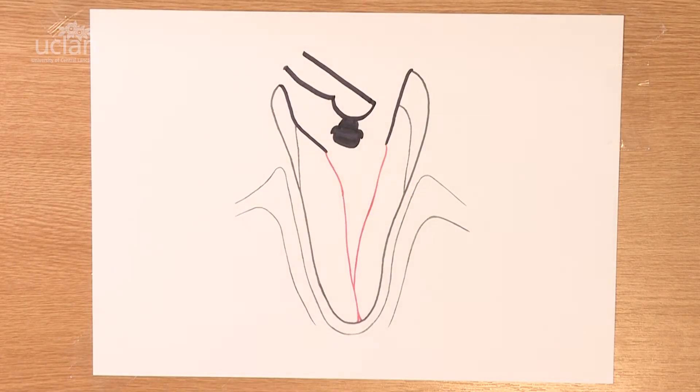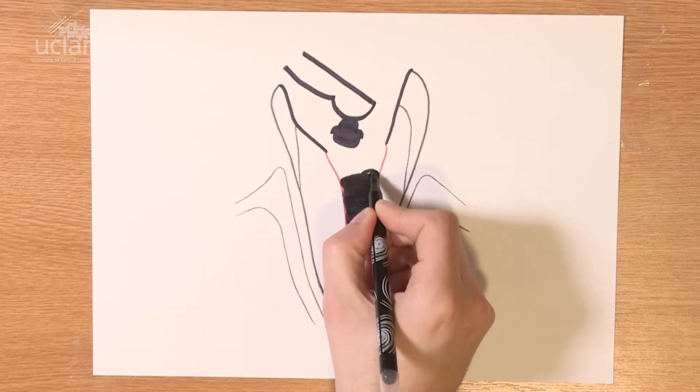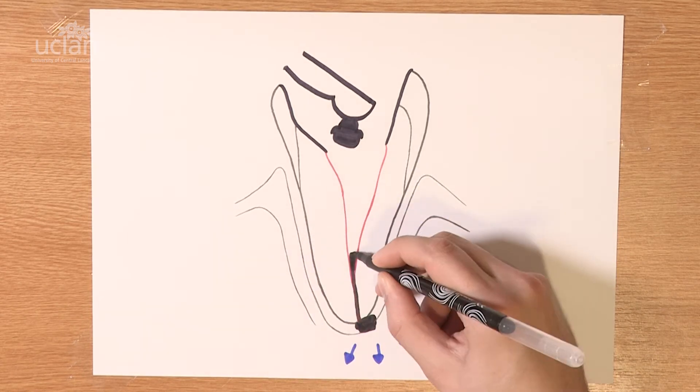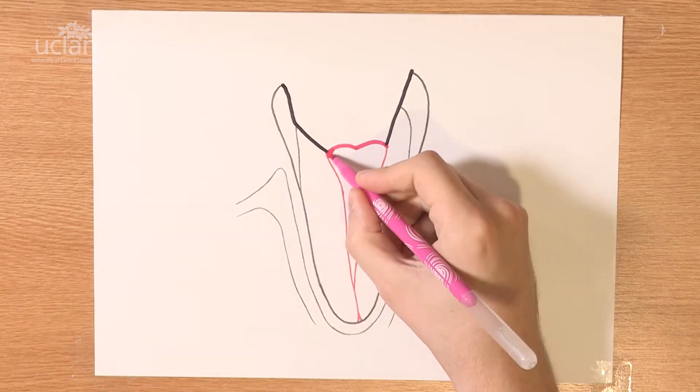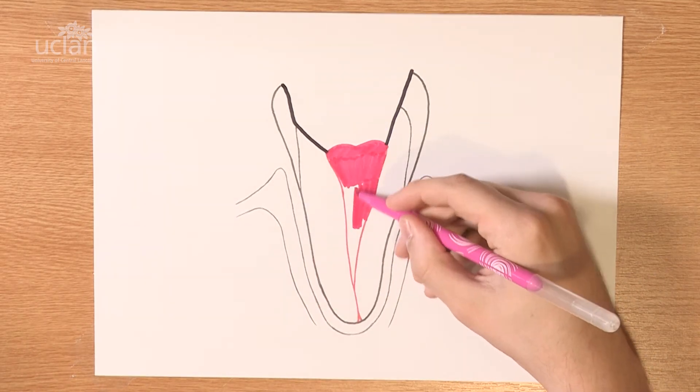The dentist cleans out the tooth, clearing away the decay and draining the infection. The nerve canal is disinfected and shaped, and then the canal system is filled and sealed to prevent reinfection.